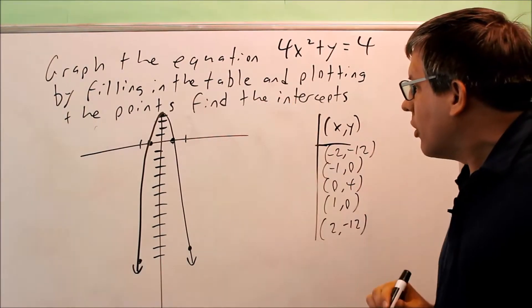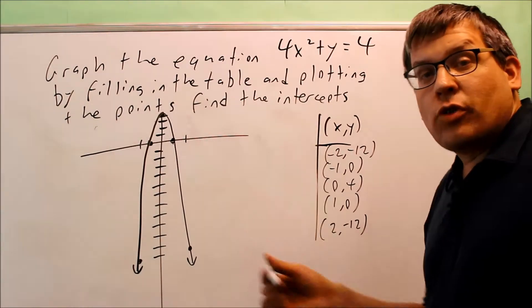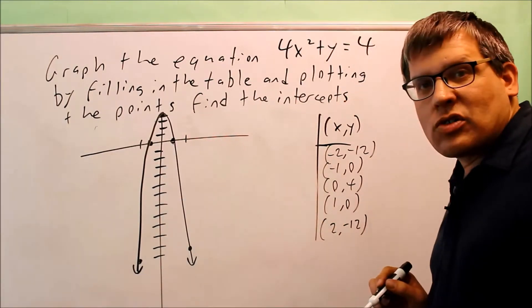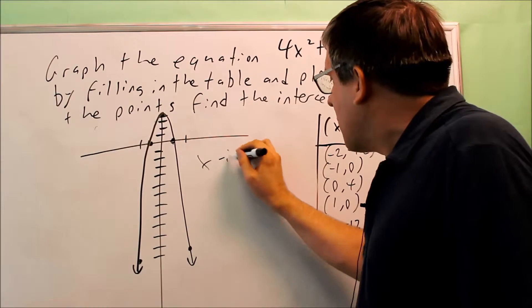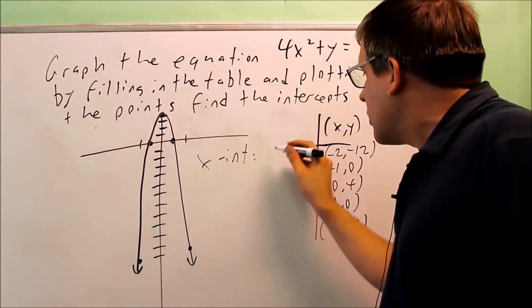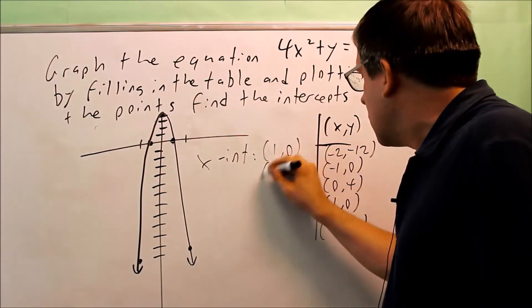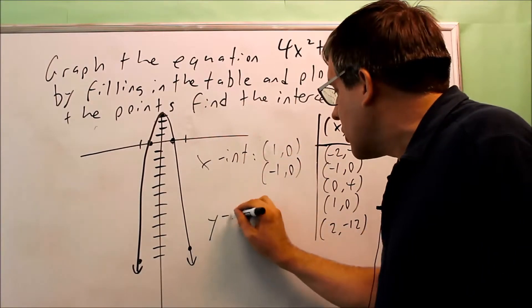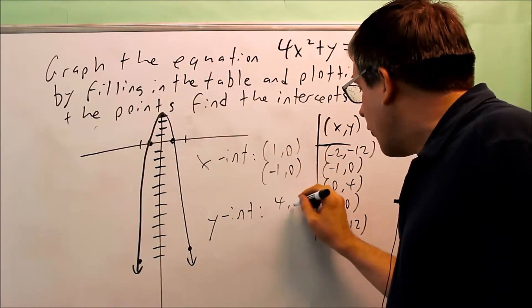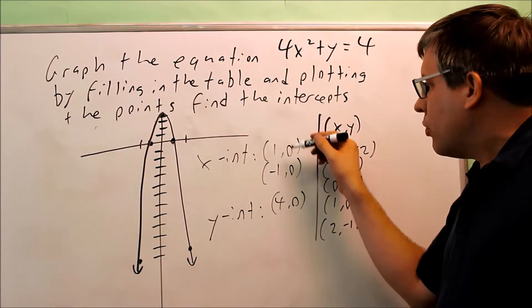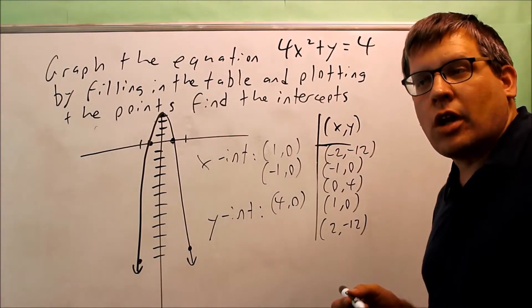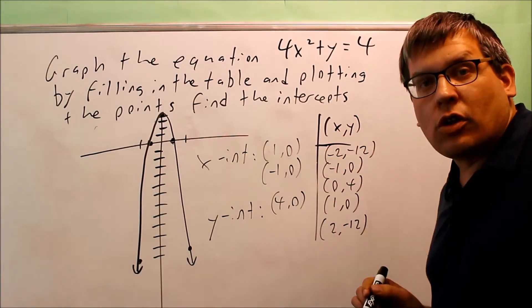The last thing asked of us is to find the intercepts. There are two ways of doing this. You can look at the intercepts directly off the graph. We can see that for the x-intercepts it's crossing at negative 1, 0 and 1, 0, so we list those just like that. The y-intercept is crossing at 4, and we indicate that as 0, 4. If you just put the numbers only — 1, negative 1, and 4 — that's also okay. But as coordinate points they would look like this.